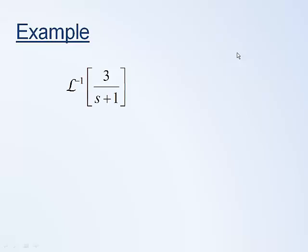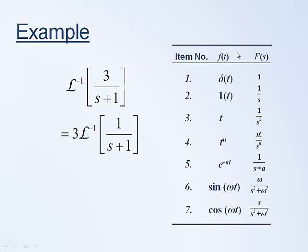Let's do a couple of examples to show how to solve for inverse Laplace transforms. We'll start with this example. We have a constant 3, which we can factor out front of the inverse Laplace transform using the linearity property. If we look in the Laplace transform pair table, we can recognize 1/(s+1) as having the form 1/(s+a) where a equals 1. The corresponding time function is an exponential e^{-at} where a equals 1. Therefore, that's our solution with the constant out front.